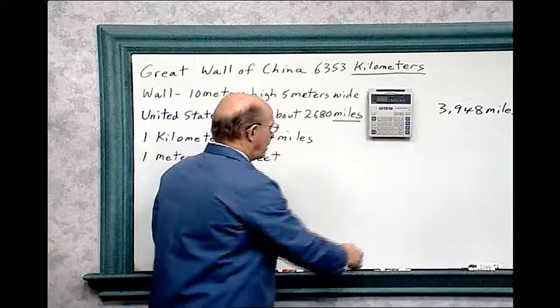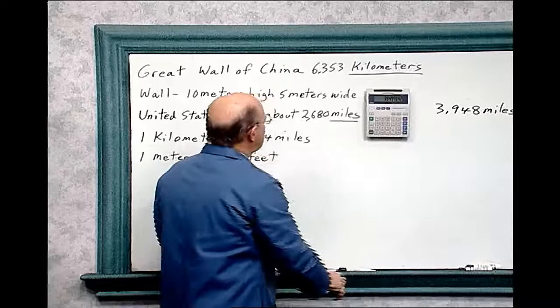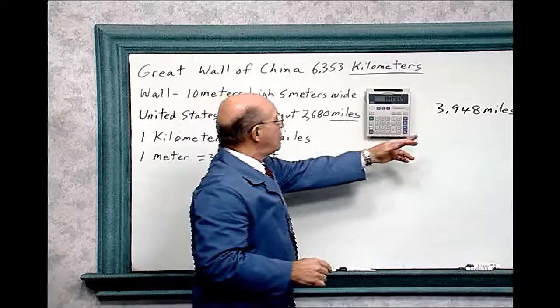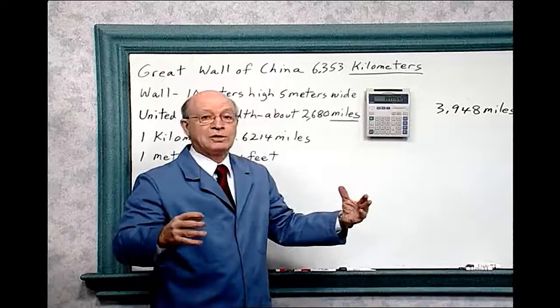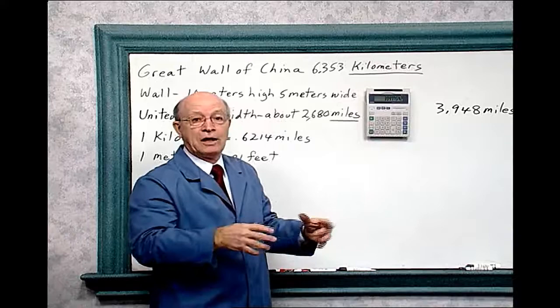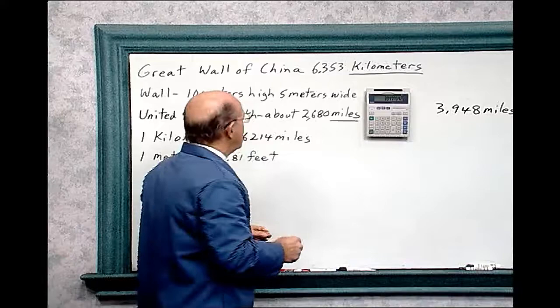That gives you an idea how big that wall is. The United States is 2,680, and this is 3,948 - let's say about 4,000 miles. It's about one and a half times the size of the United States, and built way back in the fifth century. It started and it's done by hand. You just can't imagine building a wall like that. And the next question is, well, how high is the wall and how wide is the wall?